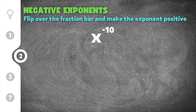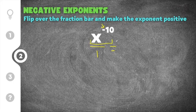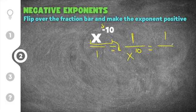Jumping to our second practice problem, we have x to the negative tenth power. It doesn't matter that this is a variable — the rule still applies. We have to get rid of this negative exponent by making it positive. Take the exponential term of x to the negative tenth, put it in the denominator by keeping the base the same and making the exponent positive, then add a one as a placeholder. Our final solution is one over x to the positive tenth power.